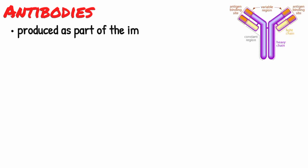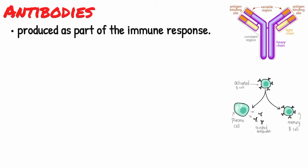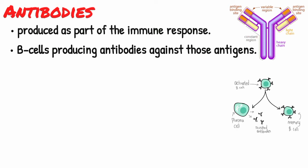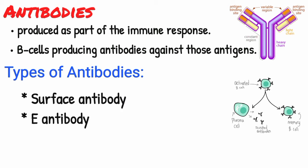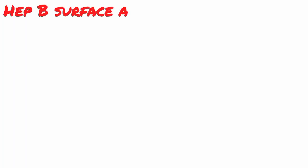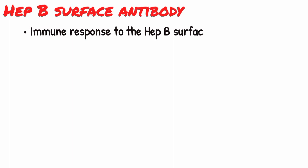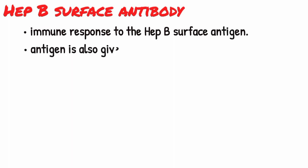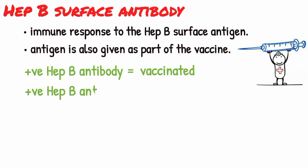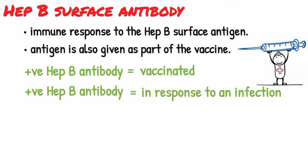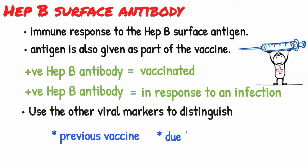Antibodies are produced as part of the immune response, by the B cells coming into contact with antigens and producing antibodies against those antigens. Just as there were three antigens involved in the hepatitis B virus, there are also three antibodies that correspond to these antigens: the surface antibody, E antibody, and core antibody. The HBsAb demonstrates an immune response to the HBsAg. Remember, the HBsAg is given as part of the vaccine, so if somebody has an HBsAb, that may simply indicate they've been vaccinated and created an immune response to the vaccine. The HBsAb may also be present in response to an infection, so you need to use the other viral markers to distinguish whether this is due to a previous vaccine or infection.